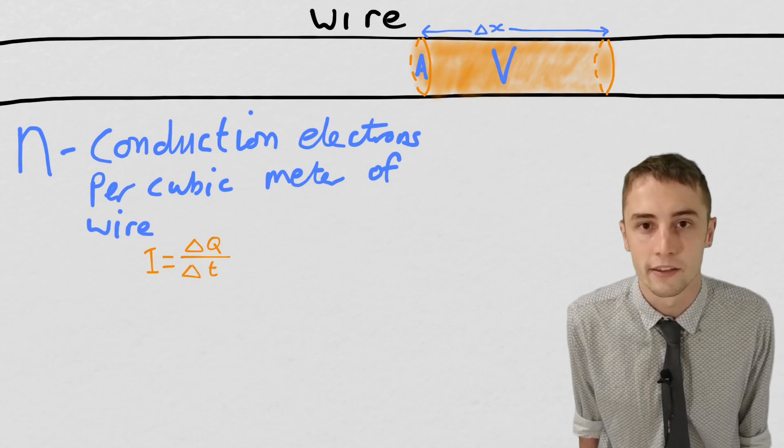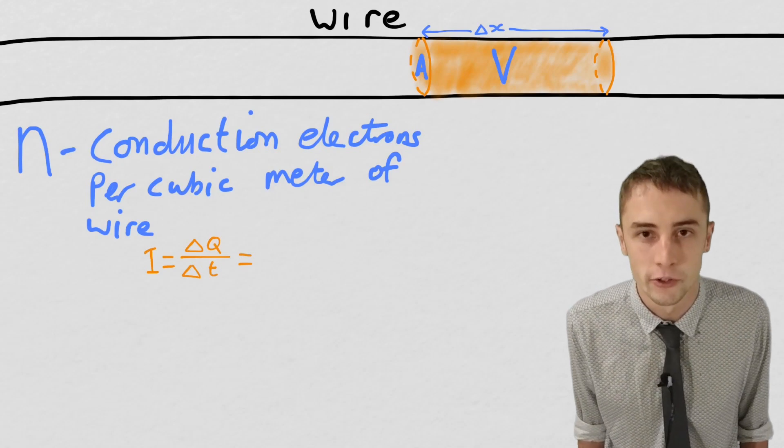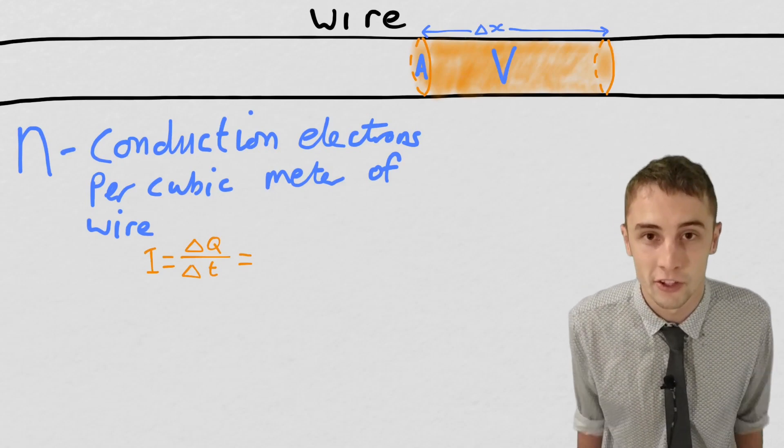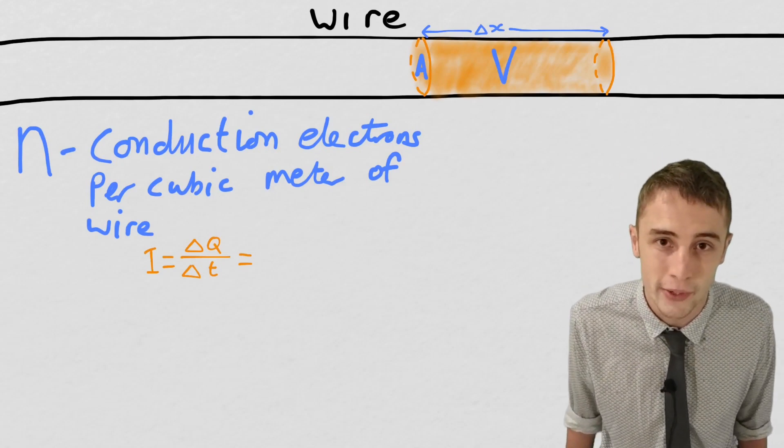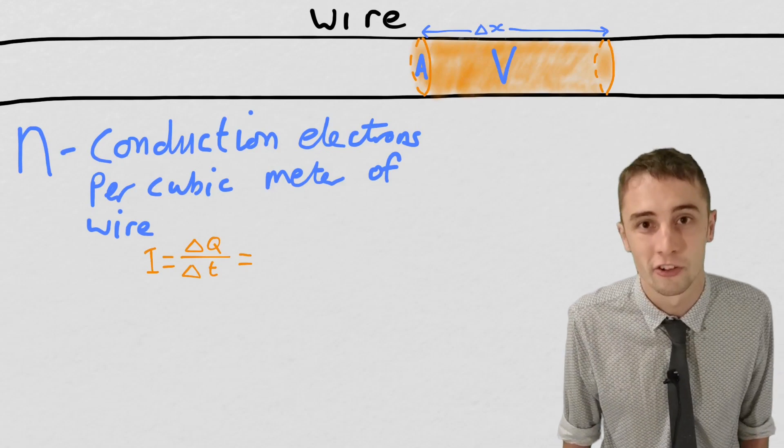Well, let's have a look at the charge flowing through this volume. So the charge flowing through this volume is just going to be the number of electrons that flow through it multiplied by the charge on an electron e.